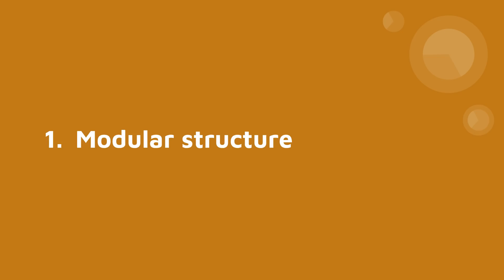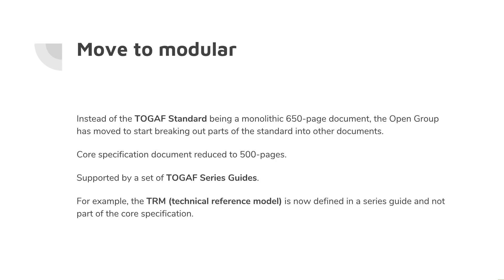The first of the four things is that they're starting to treat the TOGAF standard as a modular structure. The TOGAF 9.1 standard came in at 650 printed pages, and the TOGAF 9.2 standard is now 500 pages. They've been able to pull out 150 pages — some of those pages have just been removed, and some have been put into other documents called TOGAF Series Guides.